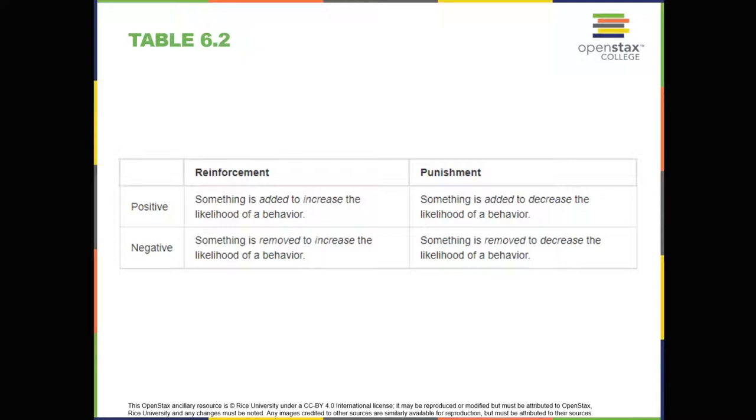Negative reinforcement is also used frequently in horse training. Riders apply pressure by pulling the reins or squeezing their legs and then remove the pressure when the horse performs the desired behavior, such as turning or speeding up. The pressure is the negative stimulus that the horse wants to remove.